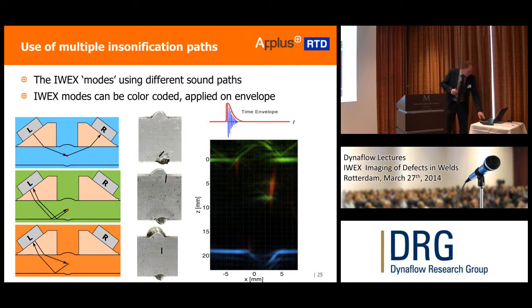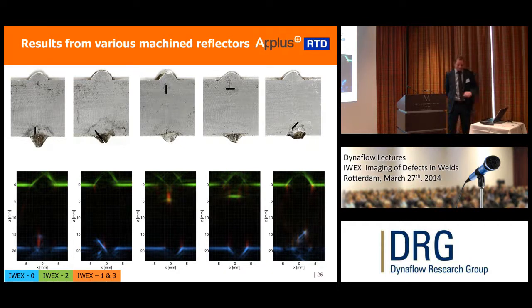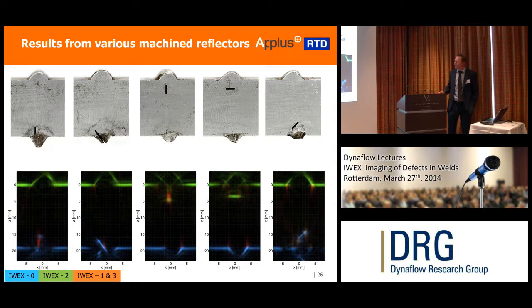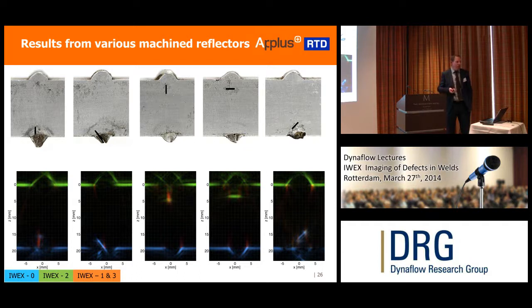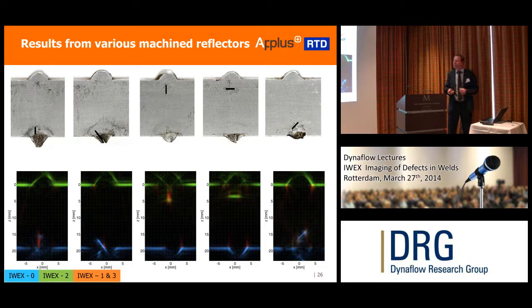These are nice examples. First, of course, machined reflectors — in this case we also added some geometry: cap reinforcement or root reinforcement. You can see the shape of the reinforcement very nicely, but also from the root, to the extent that sound can penetrate there. It's very nice because this is all the same algorithm, and I don't have to assume where the defect is or what the orientation is — I don't have to assume anything, I just do the experiment and get the image. That is in contrast with existing methodologies that require a very thorough calibration procedure.